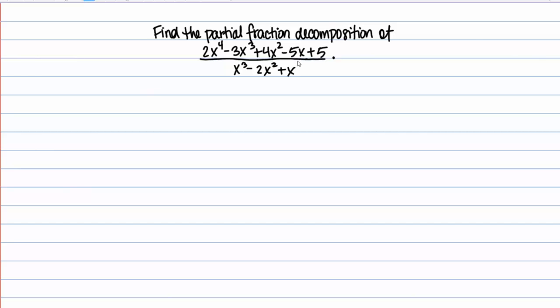Here we're asked to find the partial fraction decomposition of this rational function. There's one very important thing that we need to notice right from the beginning: this is what we call an improper rational function. That means the degree of the numerator is greater than the degree of the denominator. To be able to use the process of partial fractions, our rational function has to be proper.